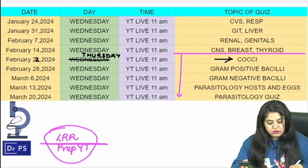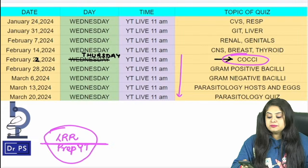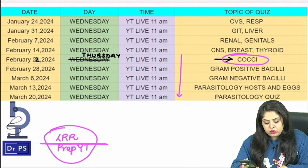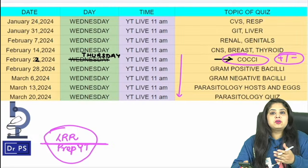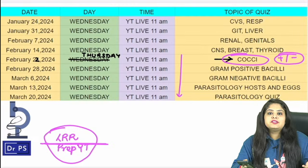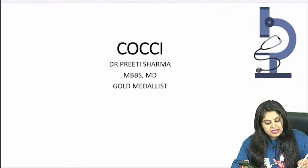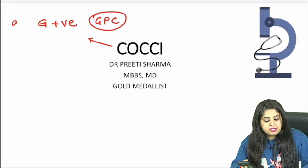Now we carry on with cocci. I hope you've all read both gram positive and gram negative cocci. Today is going to be a mixed bag, and the entire week we'll have classes and Telegram quizzes on cocci — staph, strepto, Neisseria, Moraxella. Quick revision: all cocci are gram positive, but there are exceptions learned by the mnemonic VENOM.